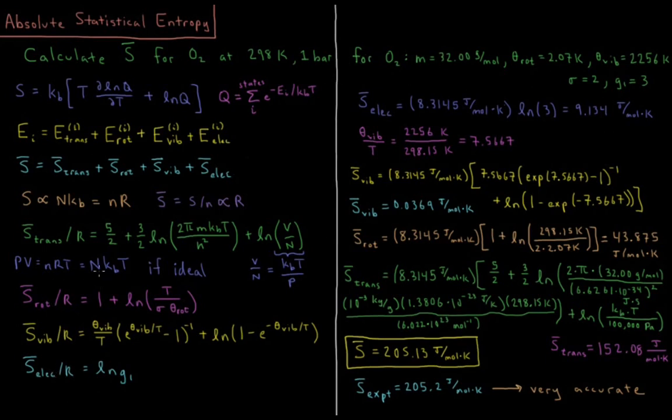So we just need to take our values that are specific to oxygen and substitute them into this equation. For O2, we have 32 grams per mole is the mass of it, so we would convert that to kilograms of a single particle in SI units to substitute that in there. The rotational temperature is 2.07 Kelvin, which we get from the rotational constant, or we can look it up in a table. The vibrational temperature is 2,256 Kelvin. The symmetry number, as I mentioned, is 2, because it's a homonuclear diatomic. And the ground state is a triplet, so the degeneracy of it is equal to 3.